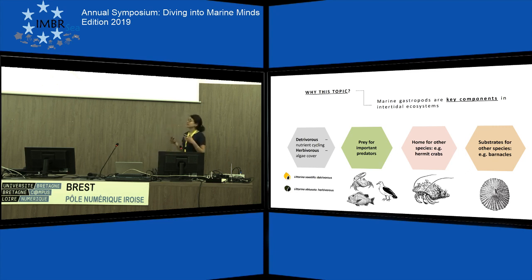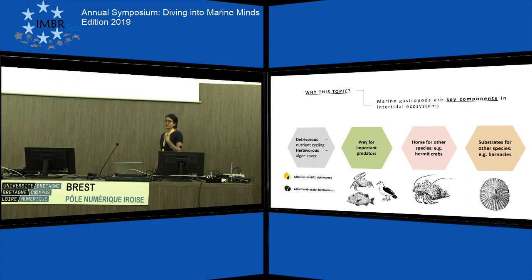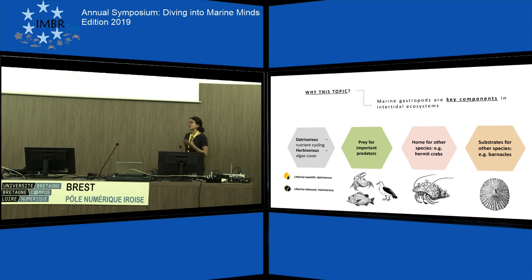Also because they are prey for important predators such as shore crabs, birds, fishes, and other marine gastropods. And when they die, the empty shell is used by species such as hermit crabs. Finally, they provide new substrates for algae species such as barnacles.